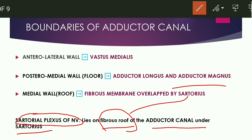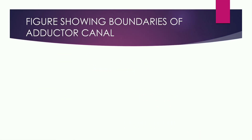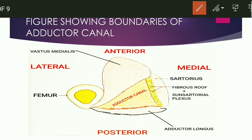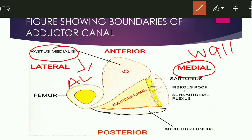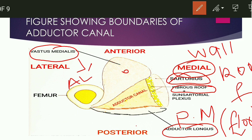The Saphenous nerve lies on the fibrous roof. Looking at the figure showing the boundaries of the Adductor Canal, Vastus Medialis forms the anterolateral wall. The medial wall or roof is formed by a fibrous membrane overlapped by the Sartorius muscle. The posteromedial wall or floor is formed by Adductor Longus and Adductor Magnus.